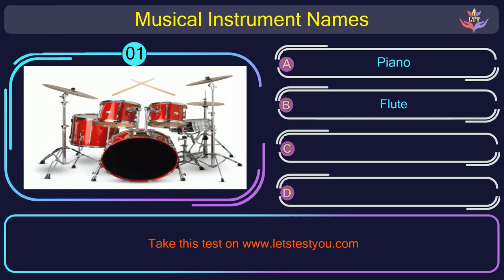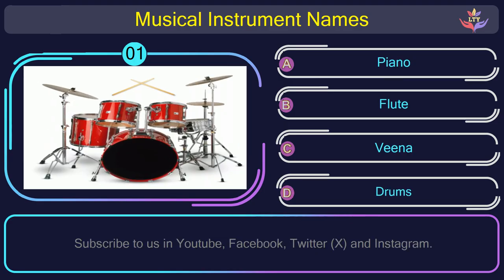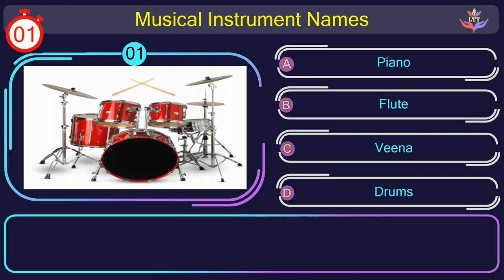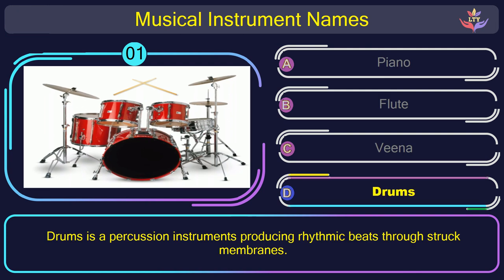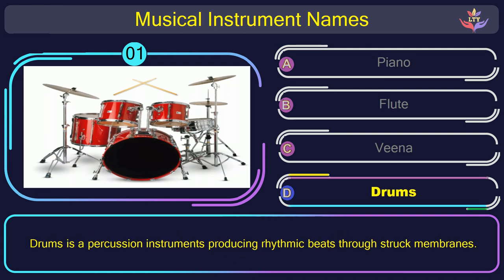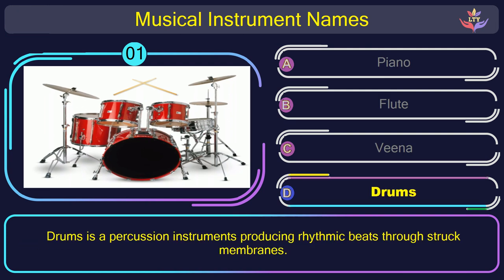Question number 1. Find the name of the musical instrument in this picture. The correct answer is option D: Drums. Drums is a percussion instrument producing rhythmic beats through struck membranes.